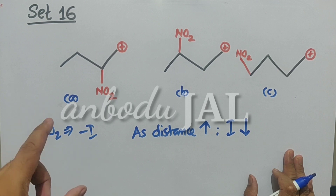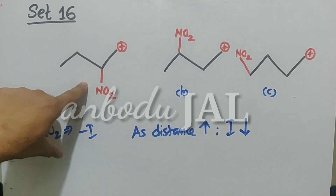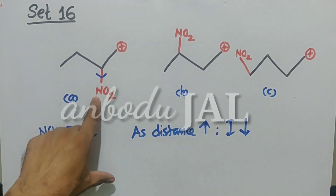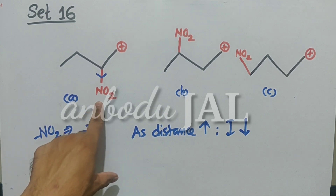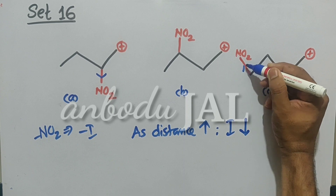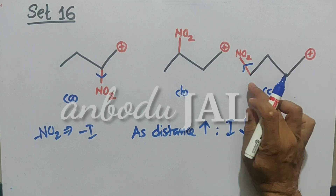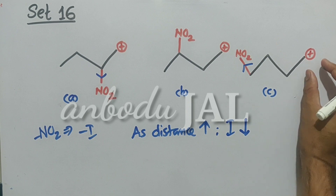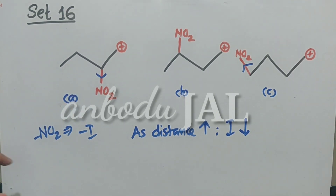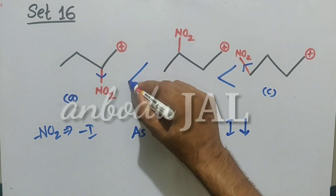We also know that as positive charge on positively charged carbon decreases, stability increases. In the first structure, NO2 group is very near to positively charged carbon, so withdrawal of electron will be maximum, and as a result, positive charge increases. In the last case, NO2 group is far away from positively charged carbon, so electron withdrawing effect will be minimum — the positive charge will be decreased to a small extent as compared to A. So the order of stability is C greater than B, which is greater than A.